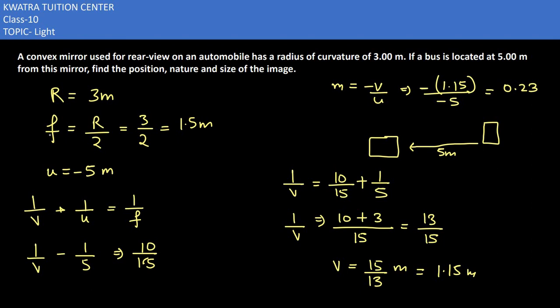So what will the image be like? It will be on the opposite side of the object. Like if you have a mirror and the object is on one side, the image will be on the other side. It will be erect and virtual, and you can also say it's diminished in this case because your focal length is quite small at 1.5 meters.